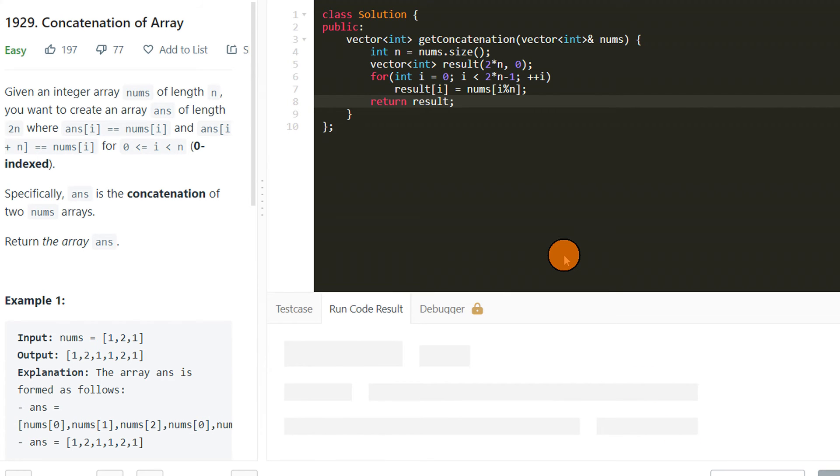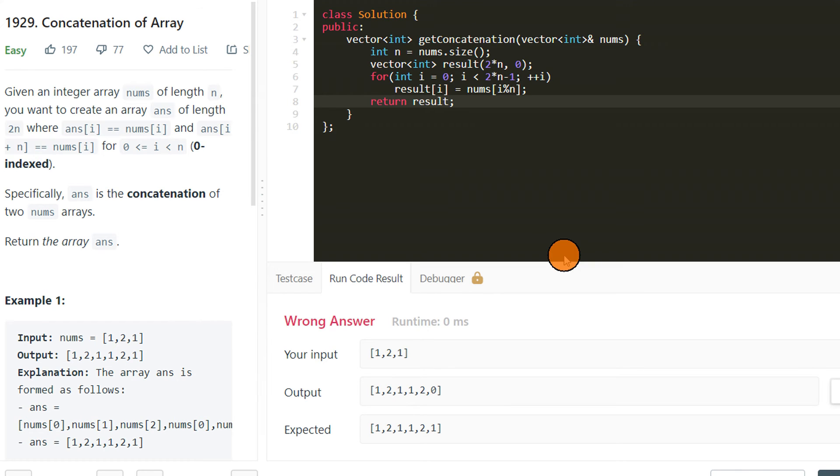First let's try this. Both are the same things. So it's a wrong answer. It looks like the last value will not be set, and the reason is that i can go till 2n minus 1.